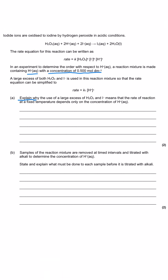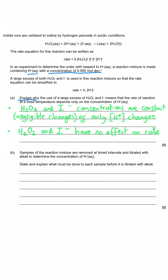What we've done is made the hydrogen peroxide and the iodide such a large concentration that any small changes to that concentration are considered negligible, so they are effectively constant. The only significant change happening during the reaction is the concentration of hydrogen ions changing. The hydrogen peroxide and iodide concentration are having no effect on rate so they can be considered to be zero order. The easiest way to get these two marks is to say that the concentrations of H₂O₂ and I⁻ are constant and can be considered to be zero order — one mark for each of those statements.